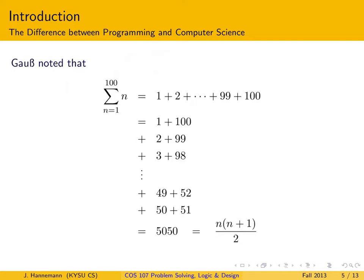Gauss noted that if he wrote up the numbers in a particular way, something happens. Here is the overall problem he was given. If you do this manually and go from left to right, the whole thing will be a fairly tedious process. This sigma notation here is just the shorthand for the full sum — the capital Greek letter sigma signifies the sum. And this problem is actually called the arithmetic series in mathematics.